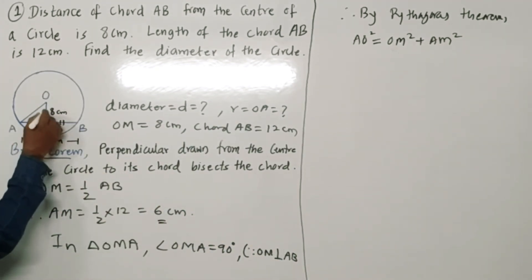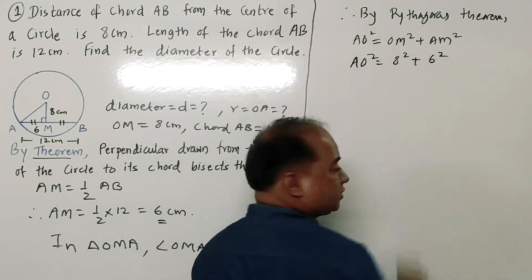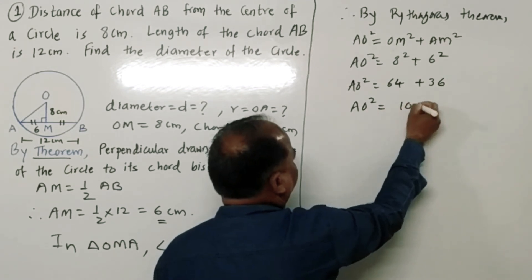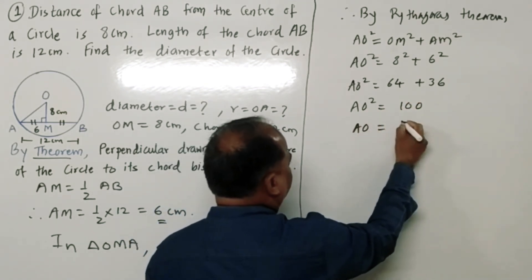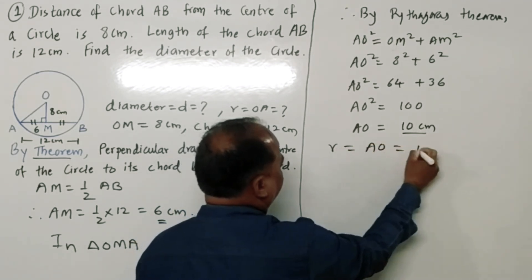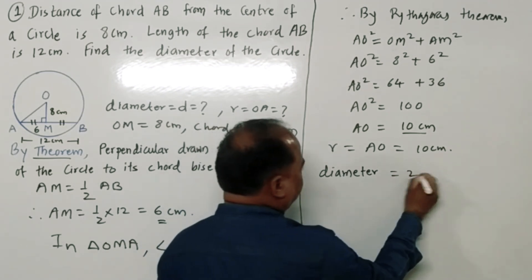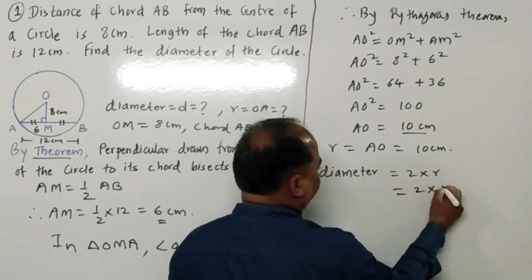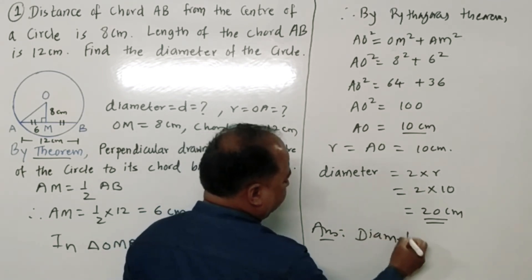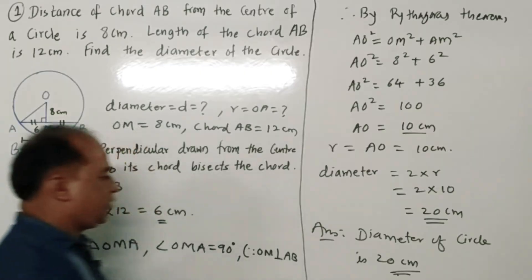AM = 6 and OM = 8, so OA² = 8² + 6² = 64 + 36 = 100. Therefore OA = √100 = 10 cm. So radius = 10 cm. Diameter = 2 × radius = 2 × 10 = 20 centimeters. The diameter of the circle is 20 centimeters.